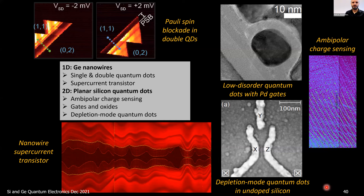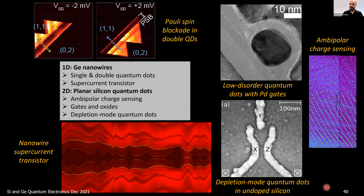To summarize: Pauli spin blockade in quantum dots in germanium nanowires, superconducting results in germanium nanowires, low-disorder quantum dots with palladium gates in planar silicon, and depletion-mode quantum dots in undoped silicon. Thank you very much for your attention.